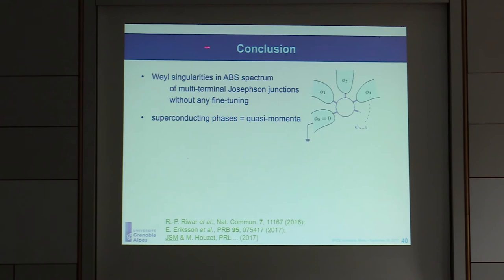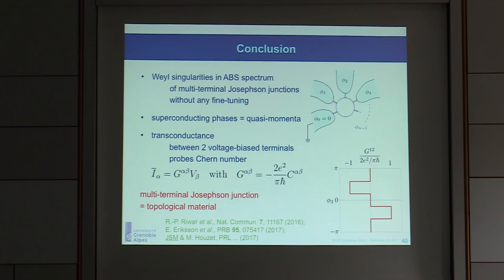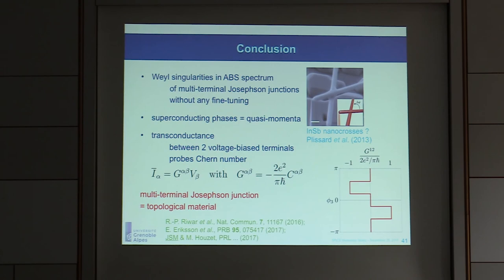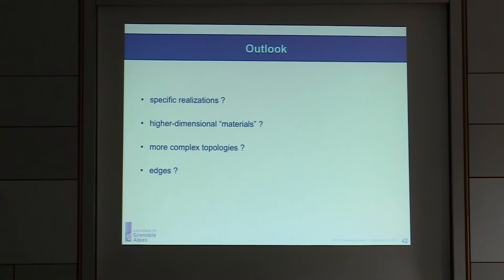In summary, we've studied the properties of multi-terminal Josephson junctions and found that using the analogy between superconducting phases and quasi-momenta, we can identify topological properties. In particular, we can find Weyl singularities tuned by the phases alone without fine-tuning junction parameters. These can be measured far from the Weyl points via quantized transconductance. Our dimensionality is limited only by the number of terminals, so we could look at topological properties of systems in more than three dimensions, which you can't do in real materials.